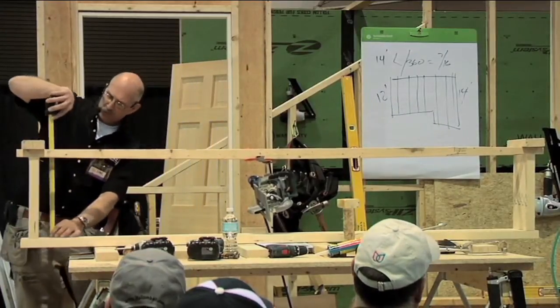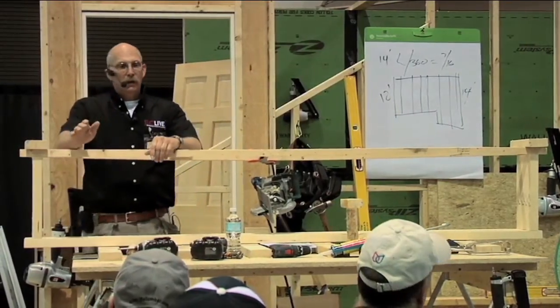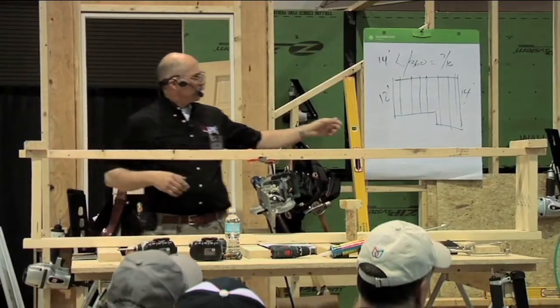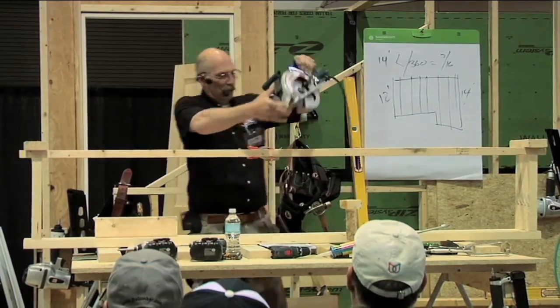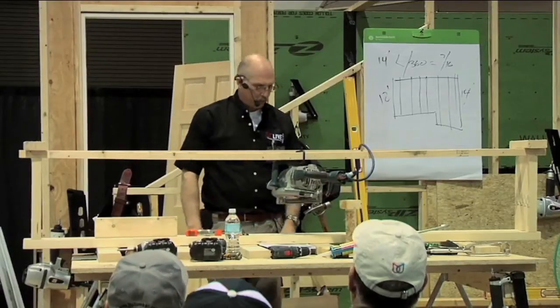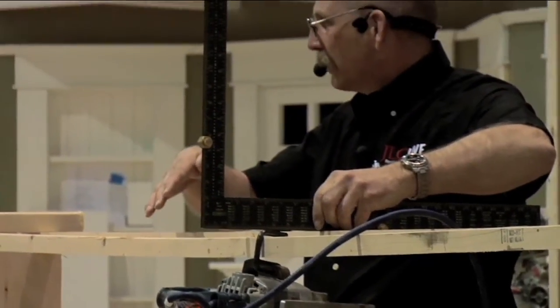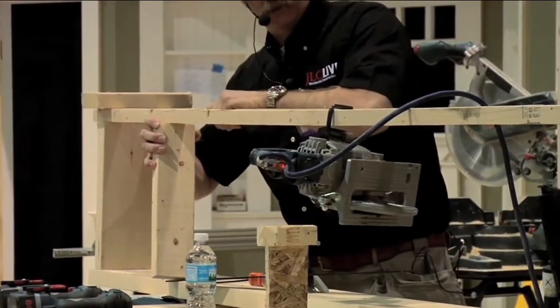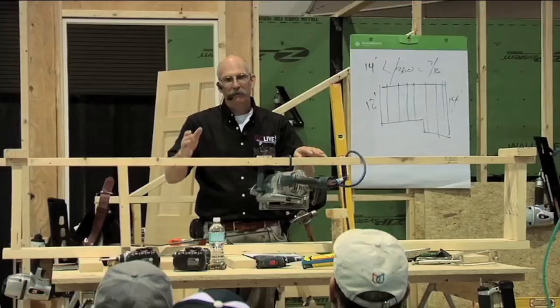What I want to illustrate to you is what happens when you change the span of a floor without changing anything else. I'm going to put a partition wall. Notice the amount of deflection that this weight is giving us. Now if I change the span of this floor by putting a partition wall underneath it, watch what happens to my deflection. See how it's been raised up? We've shortened the length here.